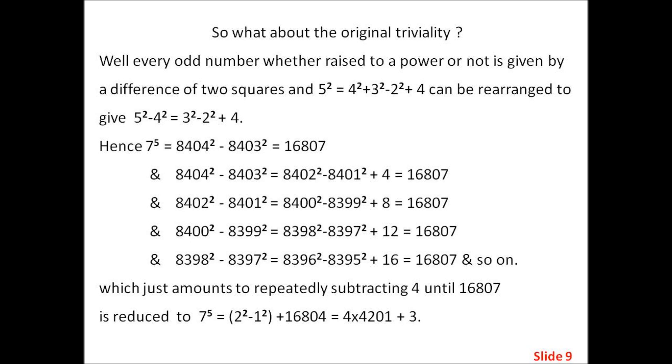And 8404 squared minus 8403 squared equals 8402 squared minus 8401 squared plus 4 equals 16807. And 8402 squared minus 8401 squared equals 8400 squared minus 8399 squared plus 8 equals 16807.